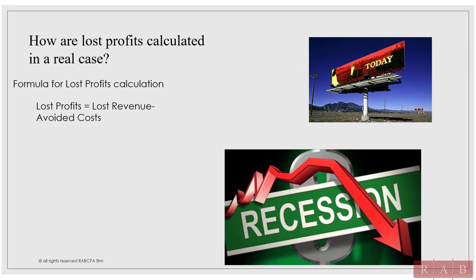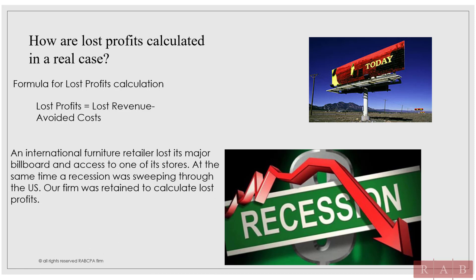Let me go through an actual case because it's a little confusing without understanding how this works. A while back we had an international retailer call us and they said they have a store located on a major thruway in New Jersey. The state came in with a major reconstruction project and covered a massive billboard outside the store, and also removed an access ramp where cars would pull in and go into the store to buy furniture. Sales were down by $20 million. We had to calculate what costs were associated with the furniture — the cost of the furniture was about 30%, so that was $6 million, and then there were commissions. Their actual lost profits were somewhere around $10 million.